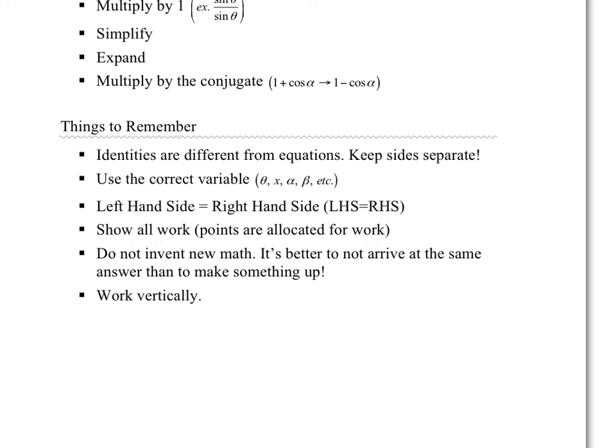Things to remember about an identity: identities are different from equations — you're going to keep sides separate. The idea is you want to make the left-hand side equal to the right-hand side, but you're going to manipulate them separately. Use the correct variables — so if I give you theta in the question, make sure to keep using theta; if I use x, keep using x — alpha, beta, and so on. At the end, you want to state that the left-hand side and the right-hand side are equal.